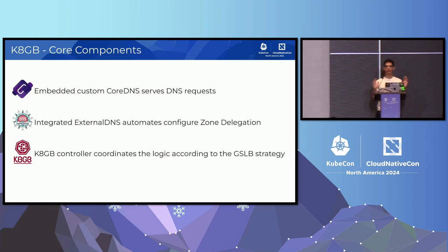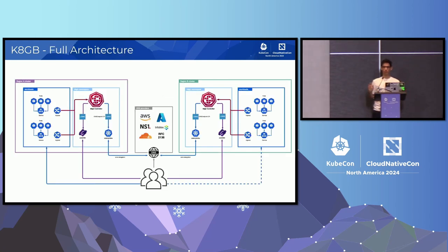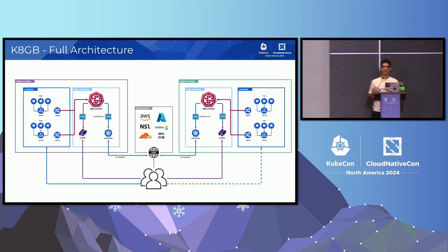How does this all work? KHEB leverages the battle-tested DNS protocol and two other very stable CNCF projects: CoreDNS and ExternalDNS. CoreDNS is used to serve DNS requests, and ExternalDNS is used to configure DNS zone delegation. In this picture we see two Kubernetes clusters where KHEB is installed. You can see the KHEB controller, CoreDNS, ExternalDNS, your applications running there, and in the middle we have an upstream DNS provider. We support a wide array of providers and can add new ones very easily thanks to the ExternalDNS community.